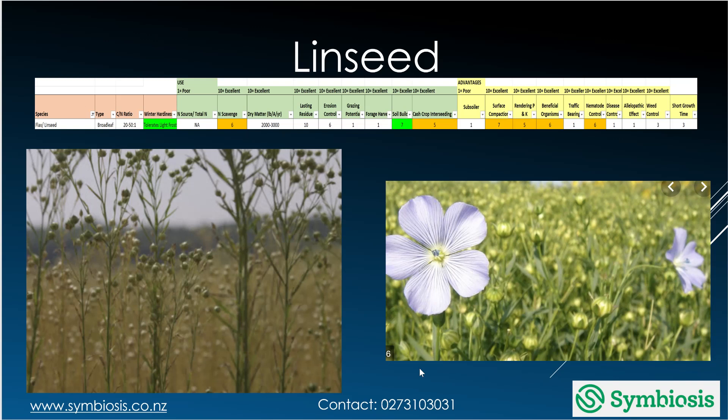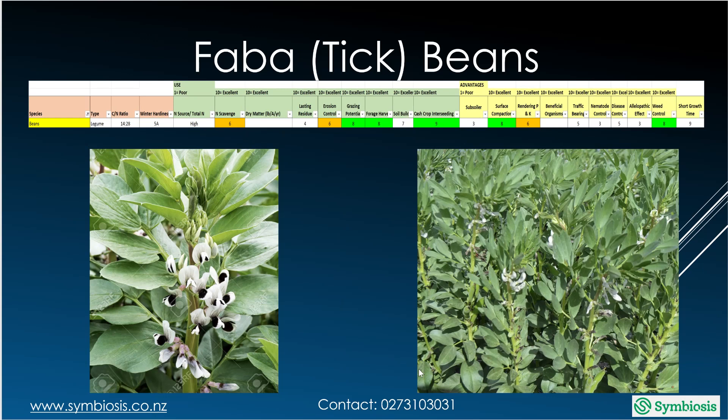Lentils are okay at scavenging nitrogen, pretty good at building soil, and not too bad at dealing with surface compaction. Faba beans are a very good source of nitrogen and not too bad at scavenging it either. They can be grazed, are quite a good soil builder, good with surface compaction, and reasonably good at rendering phosphorus and potassium available.